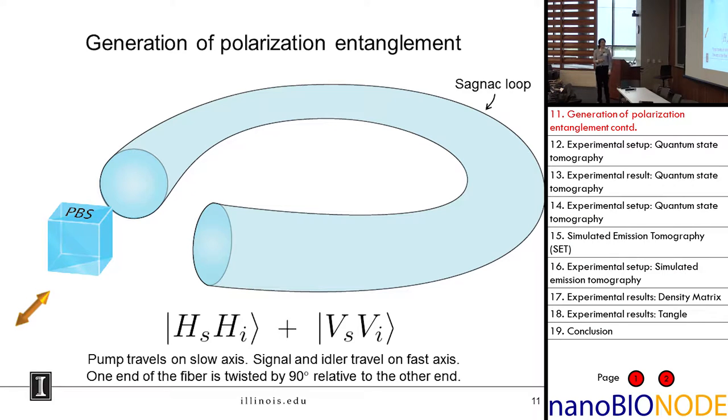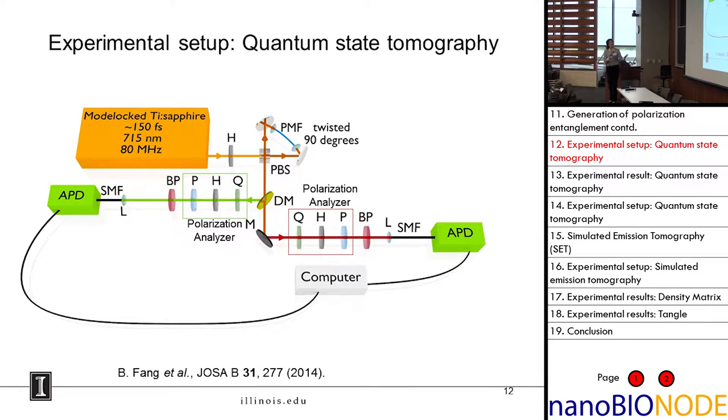Now we have a polarization entangled photon pair. This is what the experiment looks like. The issue then is how do you check your entanglement? How do you make sure that it's a high degree of entanglement, that it's really the state you want? To do that, in addition to the Sagnac loop, we have to have some analysis. And that's what the bulk of this experiment is showing.